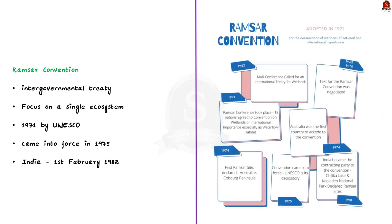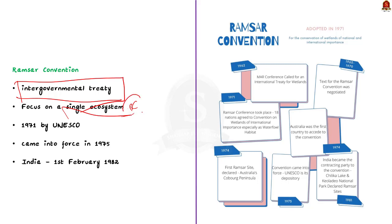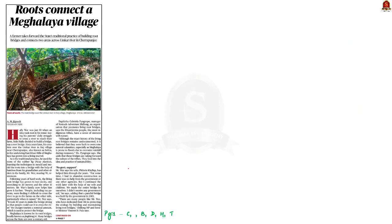Since Deepur Beel is a Ramsar site, the Ramsar Convention — or the Convention on Wetlands — is an intergovernmental treaty established in 1971 by UNESCO that came into force in 1975. It provides the framework for conservation and wise use of wetlands and their resources. It is the only global treaty to focus on a single ecosystem. India signed under it on 1st February 1982.